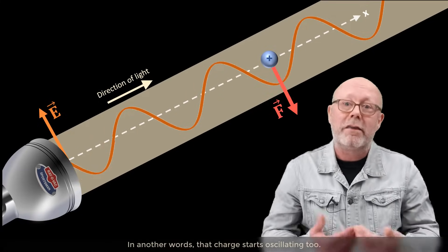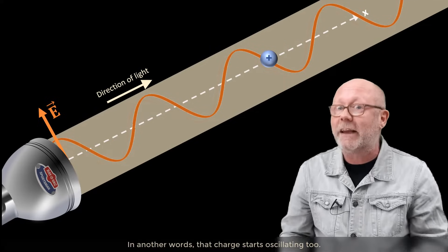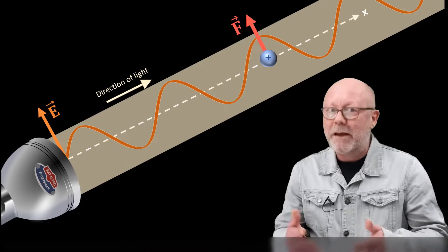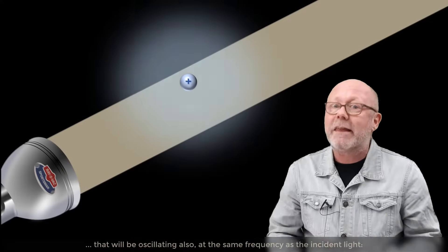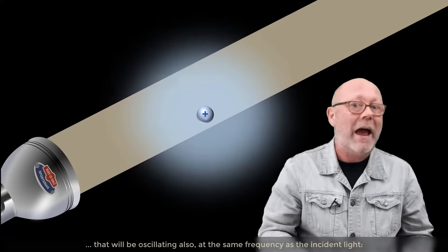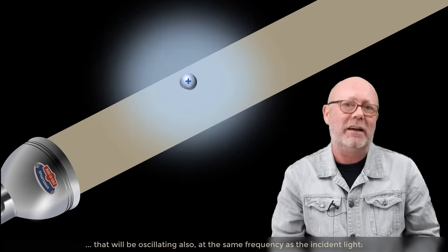In other words, that charge starts oscillating too. And because it is an electric charge, it creates its own electric field that will be oscillating also at the same frequency as the incident light.